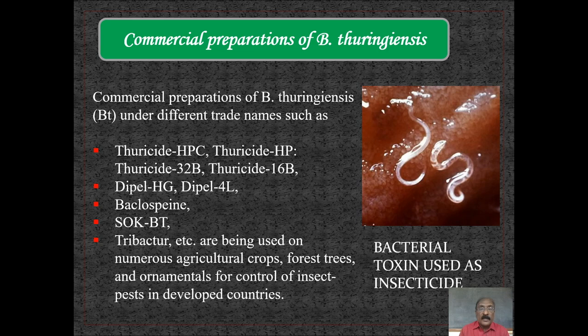Coming to the commercial preparations of Bacillus thuringiensis: Bt is available under different trade names such as Thuriside HBC, Thuriside HB, Thuriside 32B, Thuriside 16B, Dipel HG, Dipel 4L, Tribacter, etc. These are used on numerous agricultural crops, forest trees, and ornamentals for control of insect pests in developed countries.